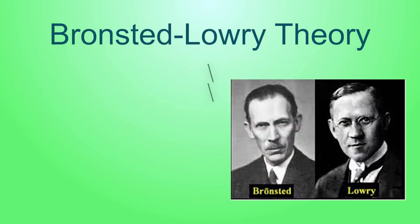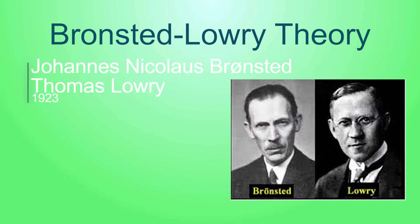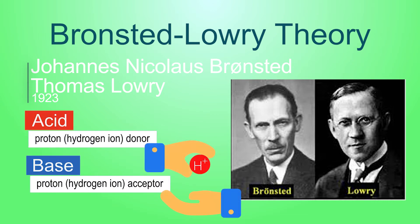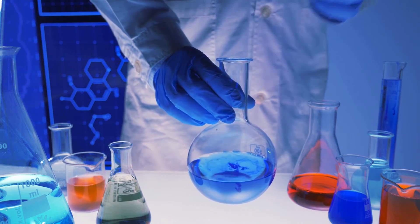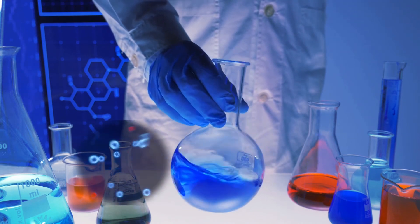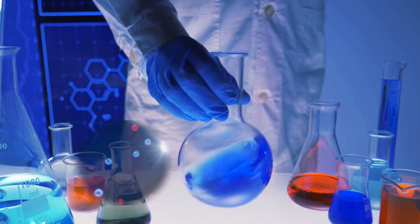Johannes Nicholas Brønsted and Thomas Lowry suggested a more general definition of acids and bases in 1923. According to their theory, an acid is any substance that can donate a proton to another substance, and a base is any substance that can accept a proton from another substance. The acid's strength depends on its tendency to donate protons, while the base's strength depends on its tendency to accept protons.